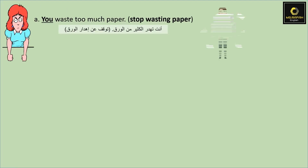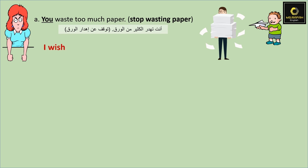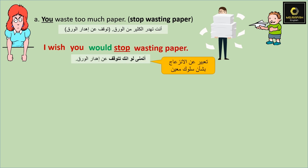You waste too much paper. We're going to use 'stop wasting paper'. We start with I wish, and the verb, so we say: I wish you would stop wasting paper. إذن دائما نقول I wish، أنا أتمنى، بعدها منحط الفاعل وبعدها إما would أو could أو الفاعل بالماضي وبعدها منحط تبمة الجملة.